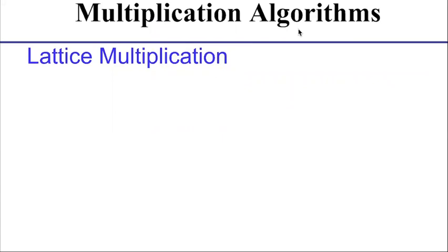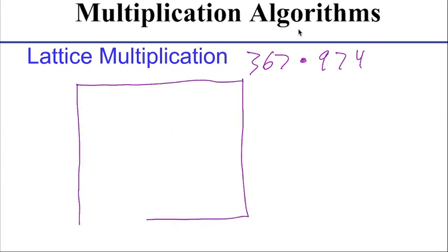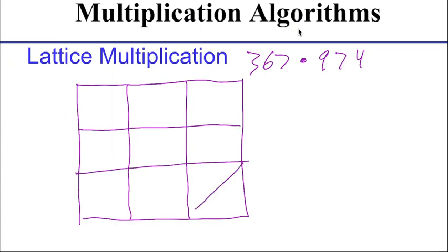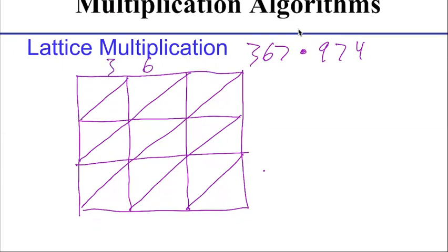Okay, we were learning lattice multiplication. So let's do 367 and multiply it by 974. So I need a 3×3 grid. And I put in all my diagonals here. So these diagonals are going to be the same thing as lattice addition with the ones, tens, hundreds place, etc. I'll put 367 up top and then 974 to the side.